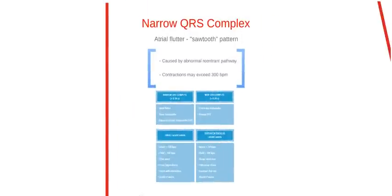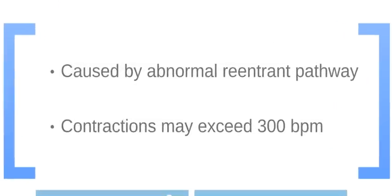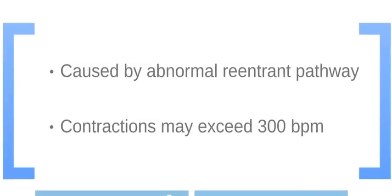For narrow QRS complexes, atrial flutter is an uncommon rhythm distinguished on an ECG as a sawtooth pattern. It is caused by an abnormal reentrant pathway that causes the atria to beat very quickly and ineffectively.